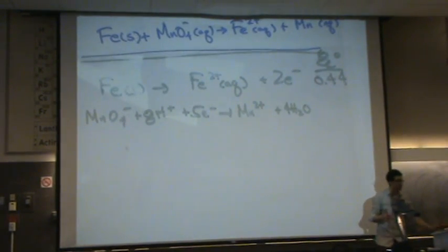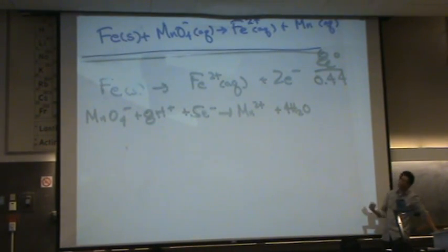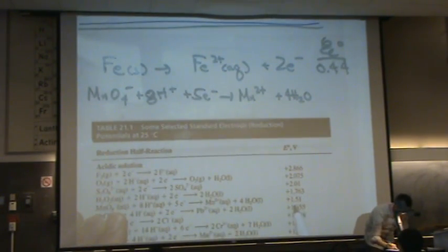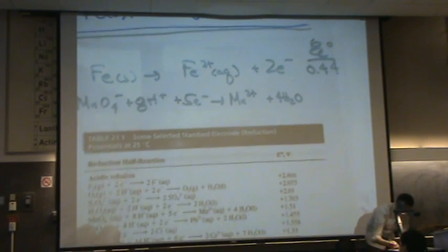So 8H plus plus 5 electrons goes to Mn2 plus plus 4H2O. Isn't that so much easier than previous classes? You just write it down. Now I need the number that goes along with it, the potential. And it's right here, 1.51. Am I going to put a positive or negative? Positive because I did not flip it.